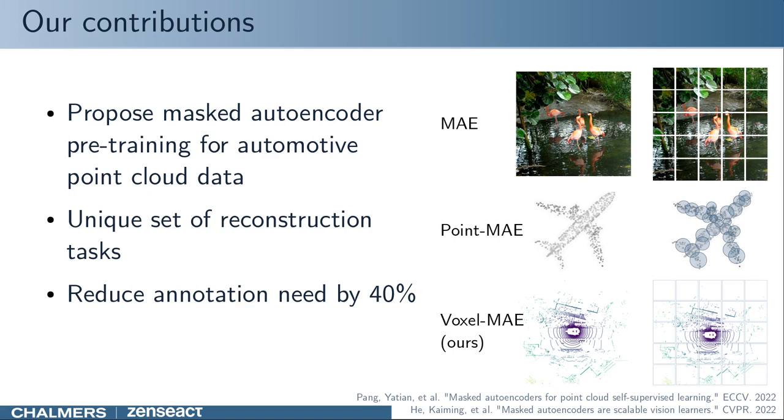While MAE originally was used for images, this type of pre-training has also been explored for point clouds. Similar to image patches of equal size, point MAE divides the point cloud into clusters of equally many points. Overlapping clusters create redundancy and are not suited for sparse automotive point clouds with varying point density.